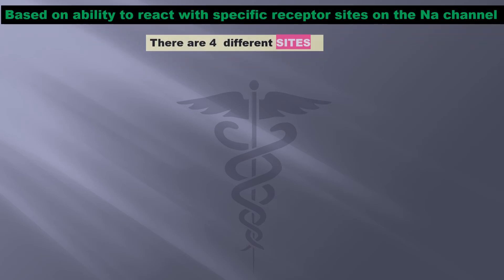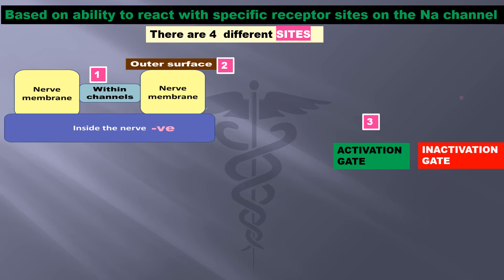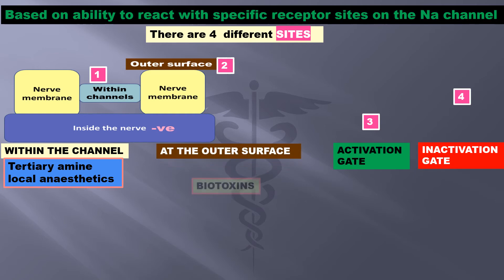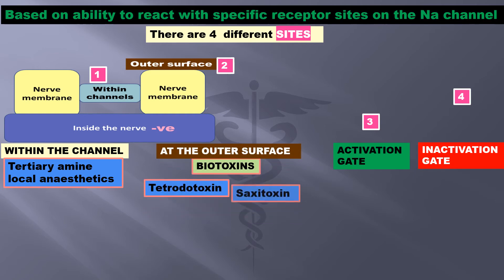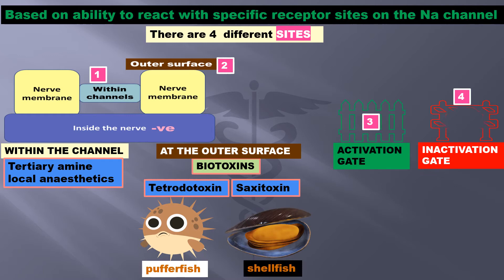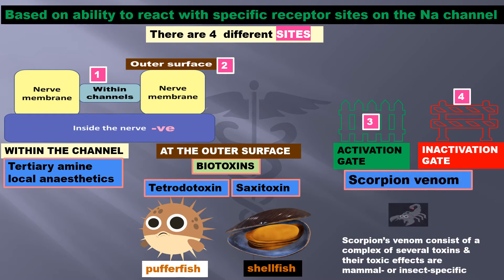Based on the ability to react with specific receptor sites on the sodium channel, there are four different sites: one within the channel, two on the outer surface, three at the activation gate, and four at the inactivation gate. Acting within the channels are the tertiary amine local anesthetics. Acting on the outer surface are the biotoxins tetrodotoxin and saxitoxin, seen in puffer fish and shellfish respectively. Acting on the activation gate or inactivation gate is scorpion venom, which consists of a complex of several toxins with mammal- or insect-specific toxic effects, producing numbness — that is, anesthesia.